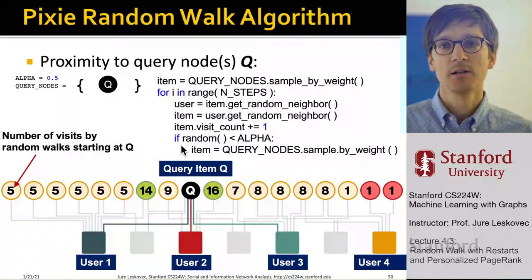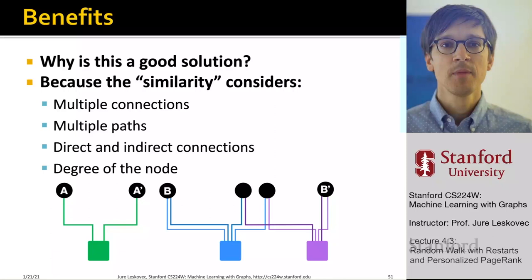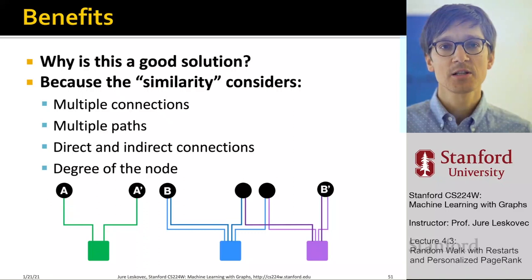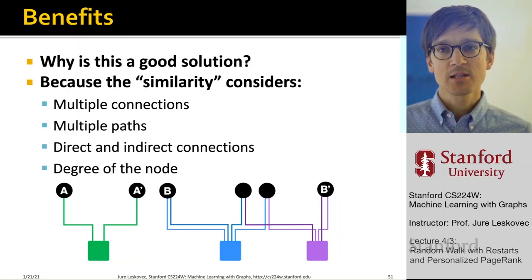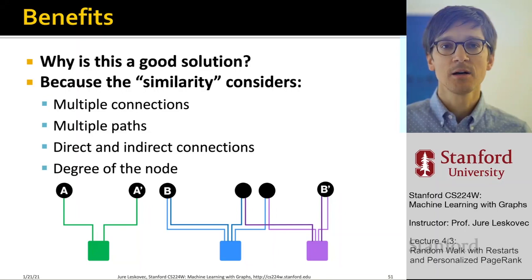What are the benefits of this approach? It measures similarity by considering many important factors: how many connections or paths exist between a pair of nodes, the strength of those connections, whether connections are direct or indirect, and the degree of nodes on the path — because the more edges a node has, the more likely the random walker is to walk away rather than reach the node of interest. It is very simple to implement, scalable, and works really well.